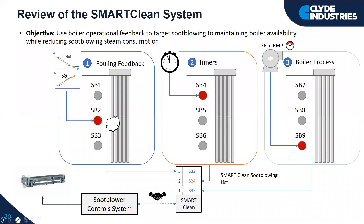So how does this system work? It monitors the fouling through thermodynamic modeling, or uses strain gauges which weigh the ash on the various pendants, and it monitors and instructs the soot blowers for each section. Through the system we also look at timers — certain soot blowers will have to run no matter what, with fixed times. We also look at process data, such as boiler draft losses, as well as rules that certain soot blowers can or cannot run based on specific conditions set. All of this information is fed into the Smart Clean system, which drives the soot blowers and the steam flow to those soot blowers.